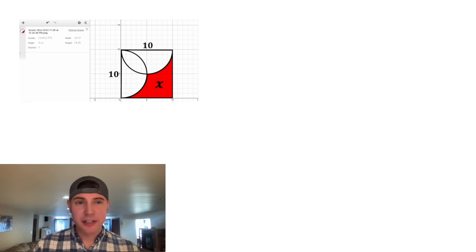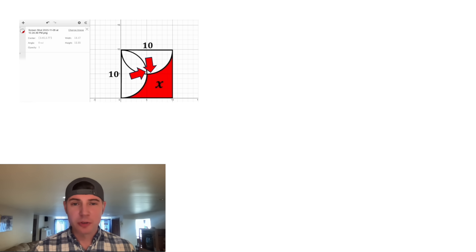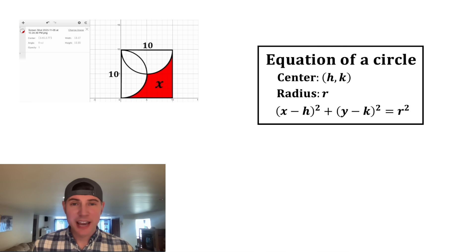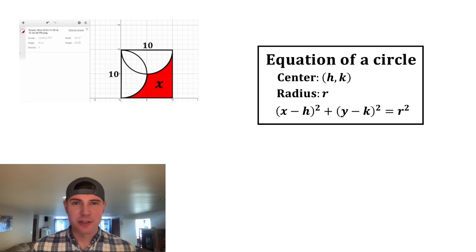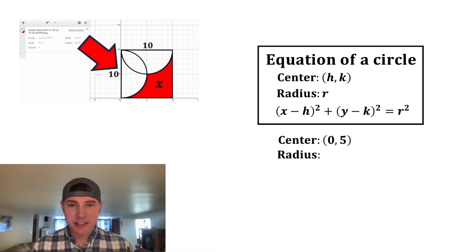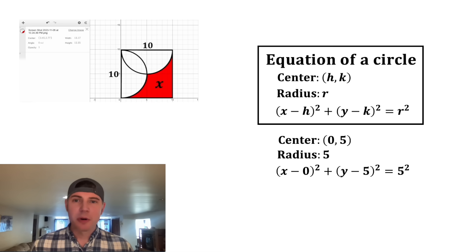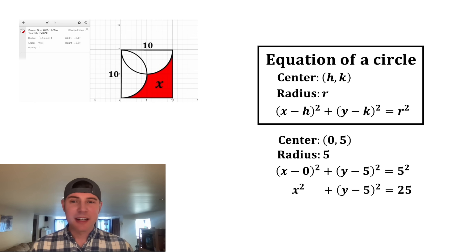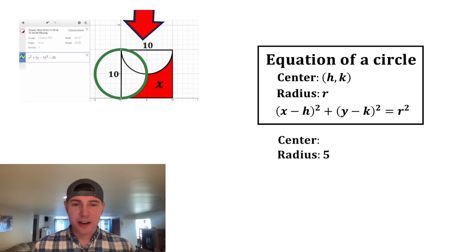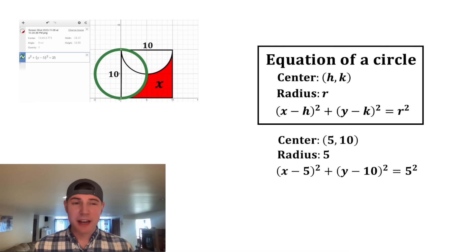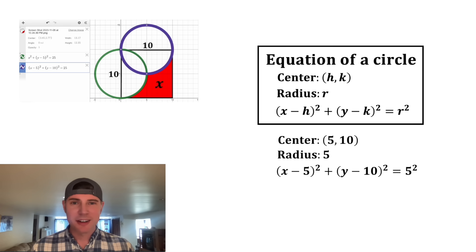First, we take our image and place it on a graph. Here it is in Desmos, and we want to find the equations of the two circles cutting into the square. The equation of a circle is x minus h squared plus y minus k squared equals r squared, where hk is the center and r is the radius. For this first circle, the center is at (0, 5) and it has a radius of 5, so our equation is x squared plus y minus 5 squared equals 25. This other circle also has a radius of 5 but its center is at (5, 10), so that equation is x minus 5 squared plus y minus 10 squared equals 25. Let's do the green circle first.